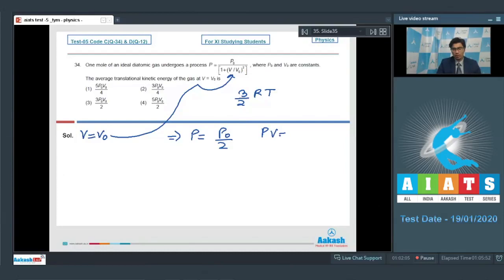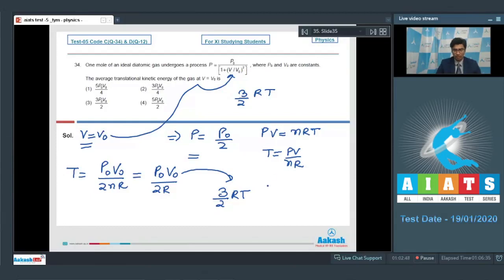Dear students, from the expression PV is equal to NRT, that is the ideal gas equation, we can write down that T is equal to PV by NR. On substituting the value of P as P0 by 2 and the value of V as V0, we can write down the value of T to be equal to P0 V0 by 2 NR. Since the number of moles is 1, we can write down T to be equal to P0 V0 by 2R. The average translational kinetic energy which is equal to 3 by 2 RT can be written if we substitute the value of T in this expression.